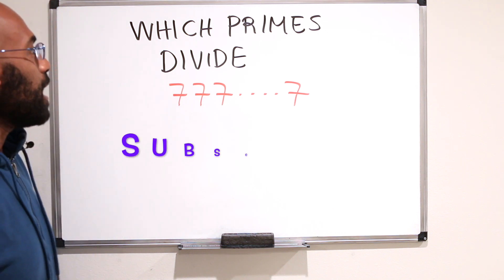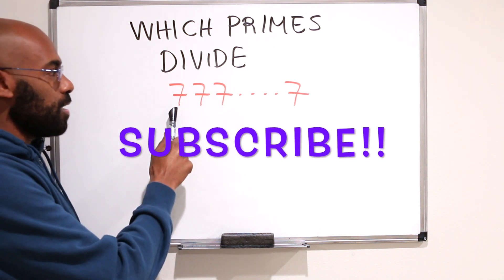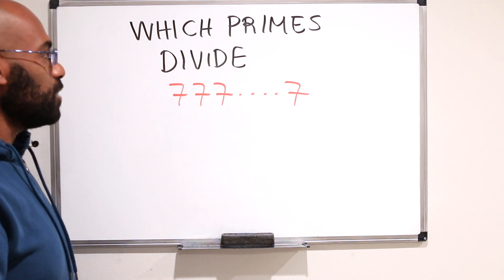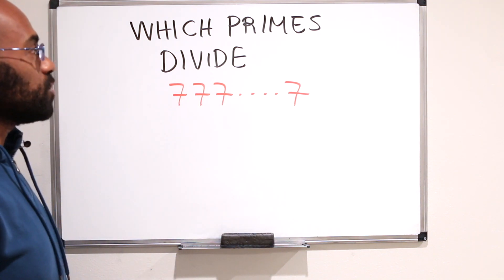Today, we're going to talk about the question of which primes divide a number that contains a bunch of 7s in it. And the answer is quite interesting. It turns out to be almost all primes.